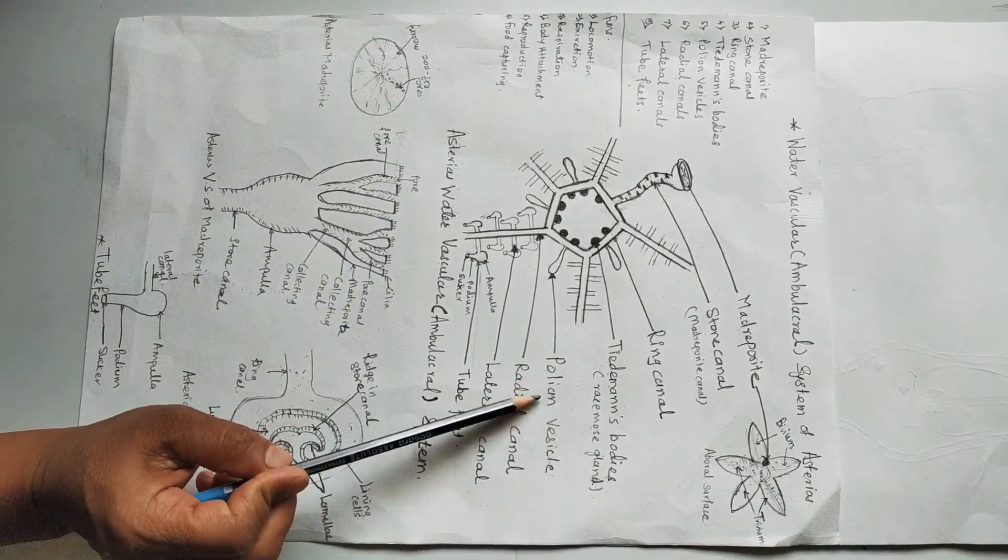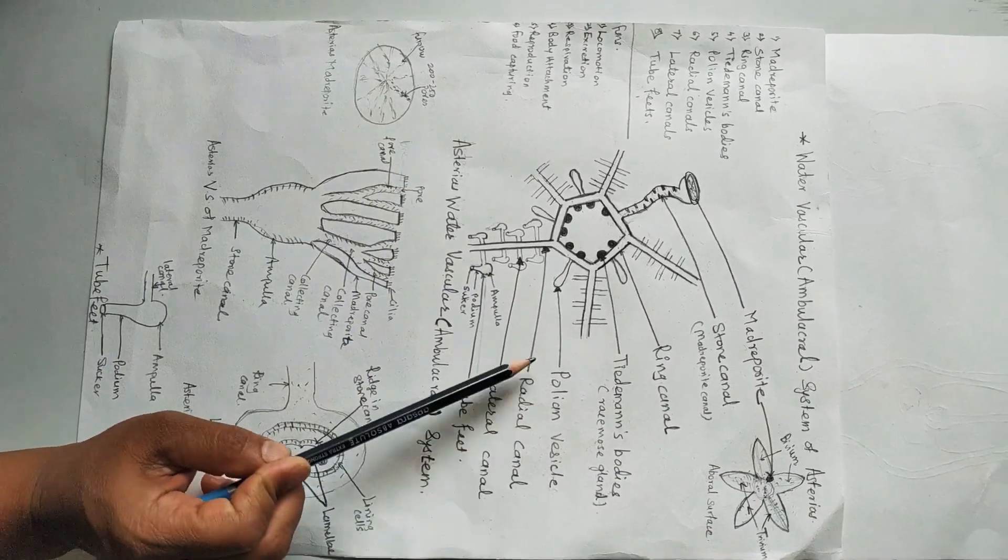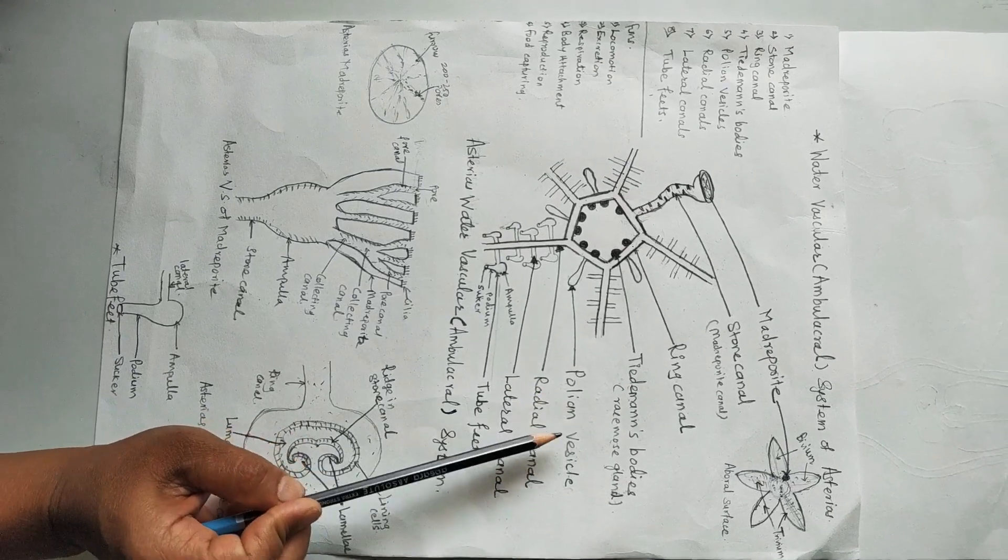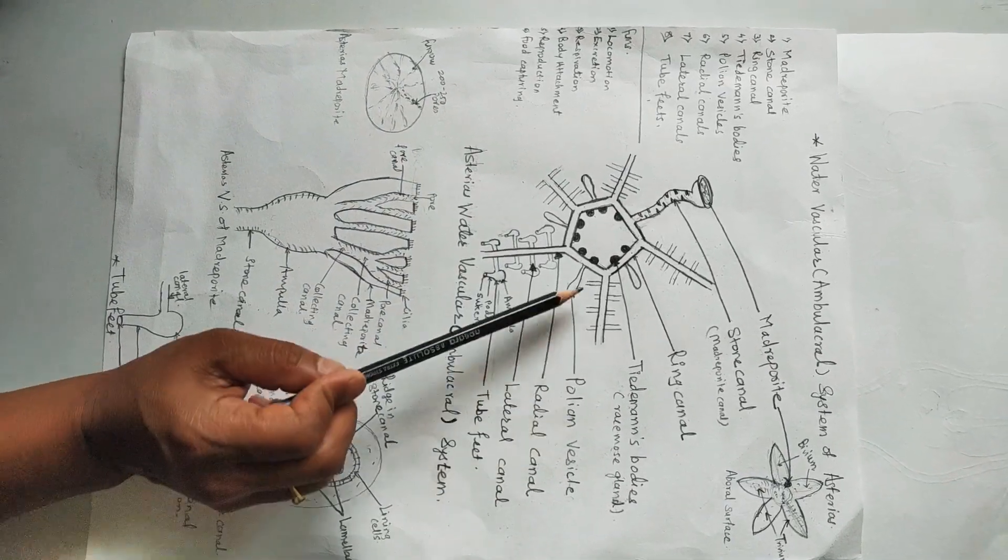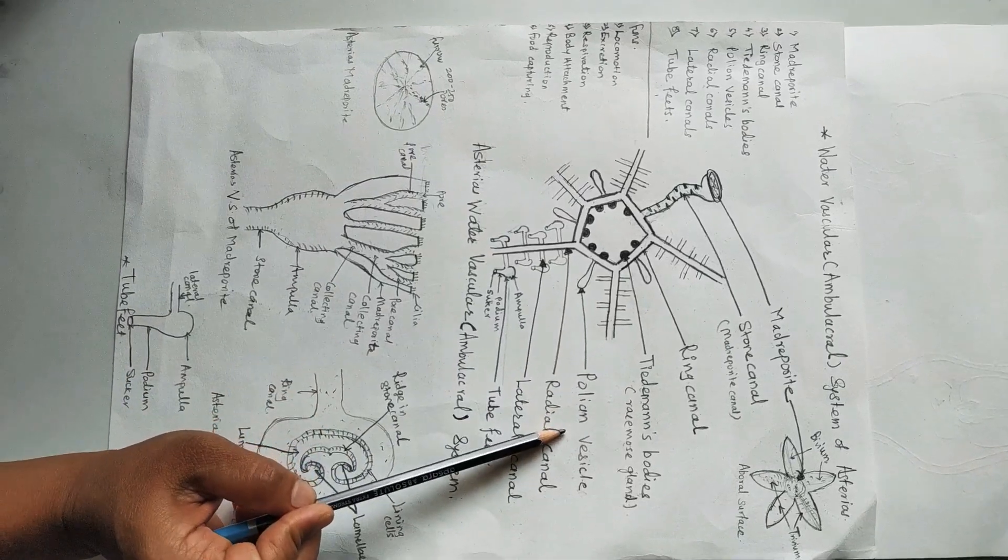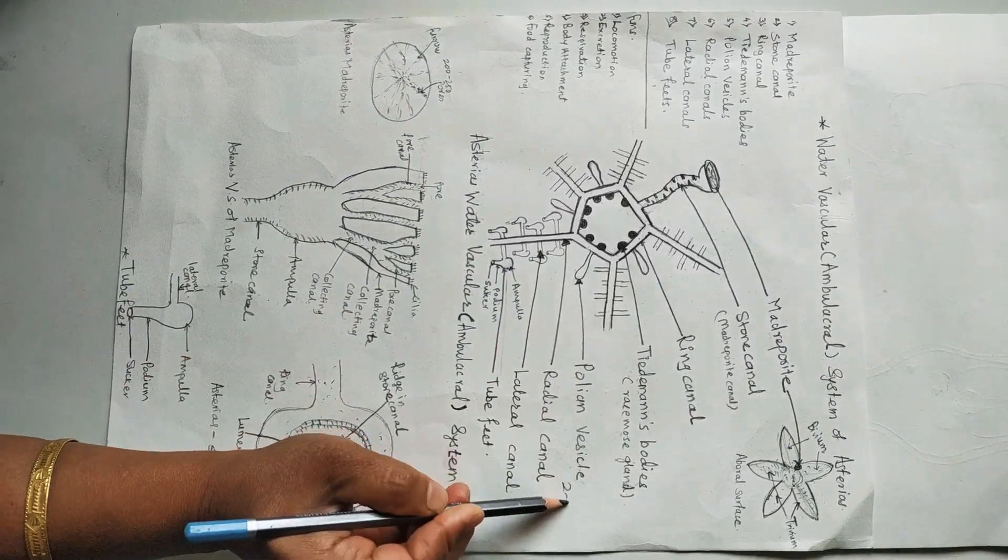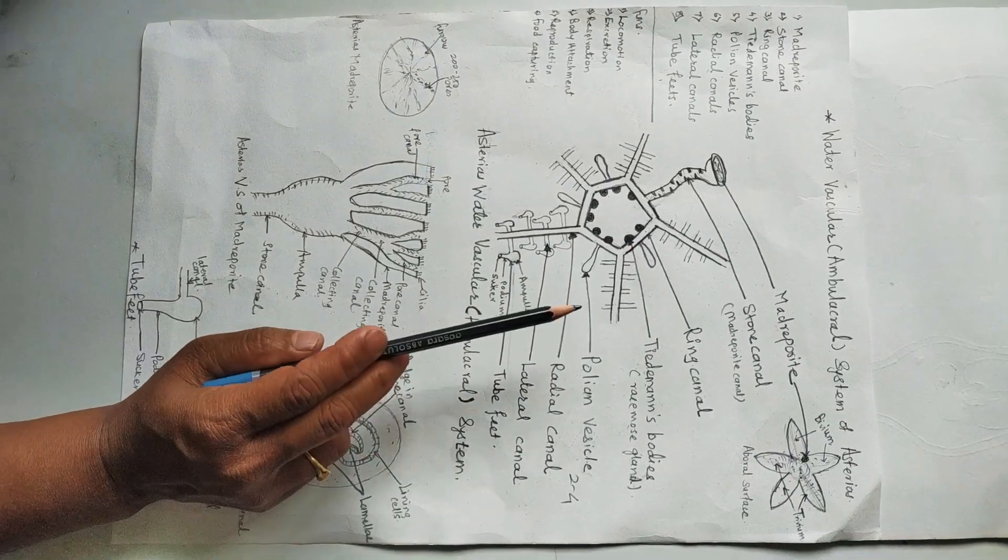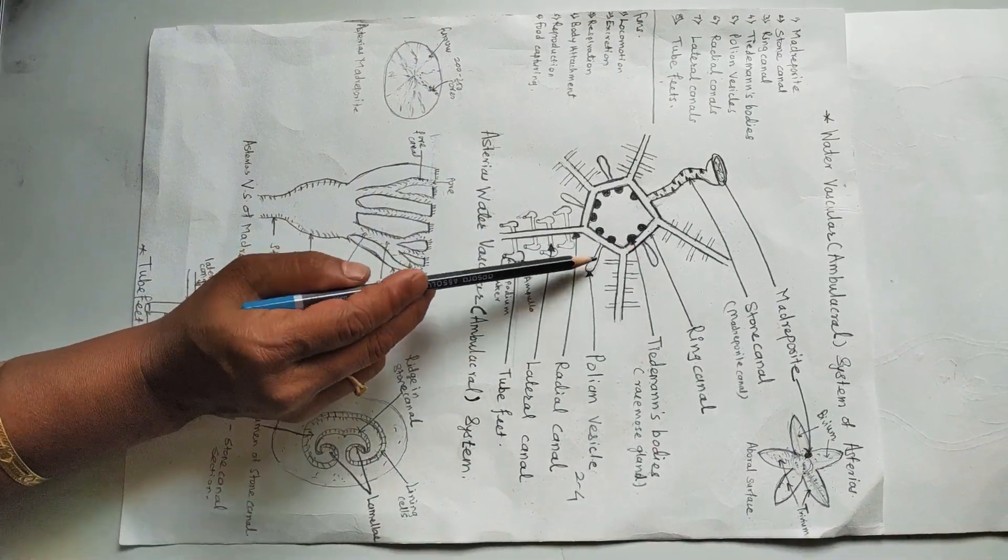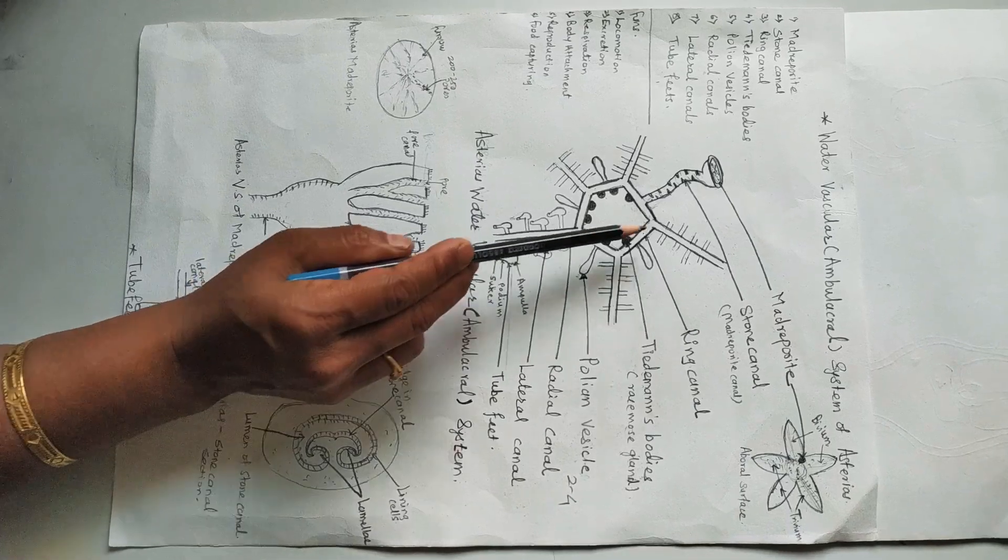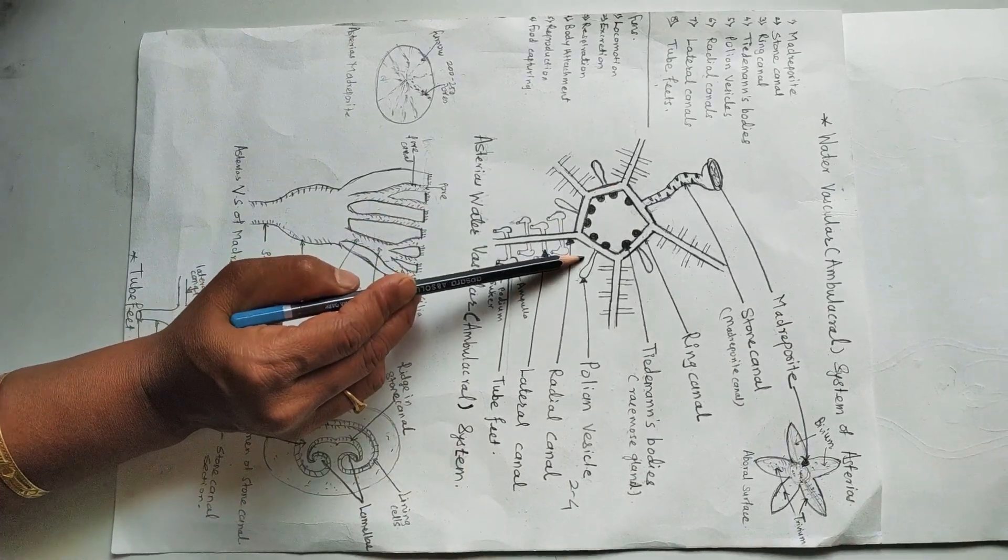The next part is the polian vesicle. In Asterias, they are absent. But in most sea stars, the polian vesicles are present. The number is variable, about two to four in number, and they are present at the interradial position periphery to the ring canal.